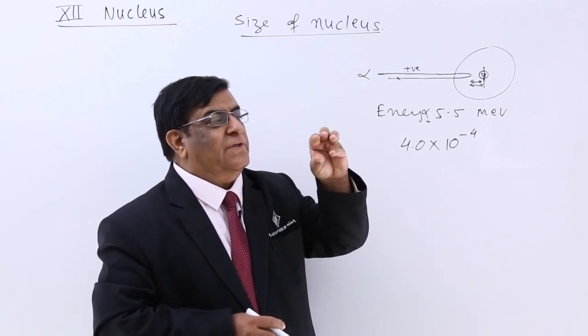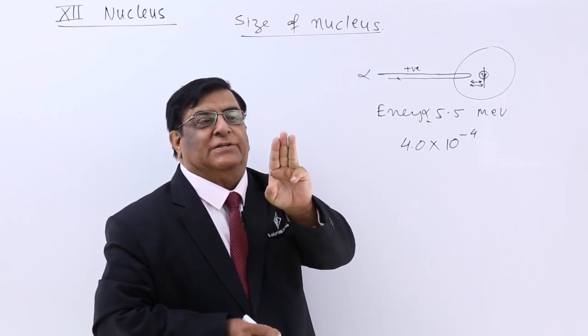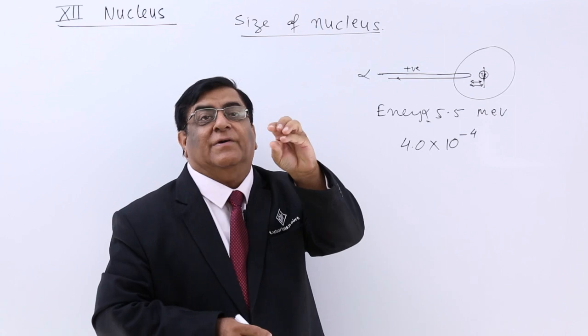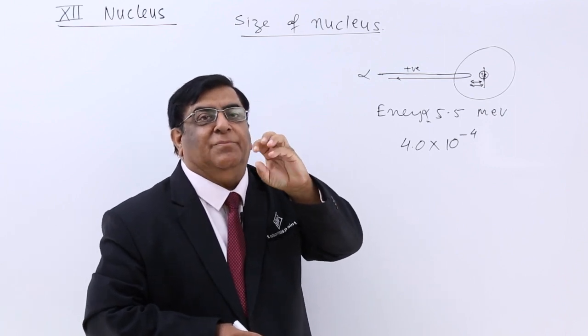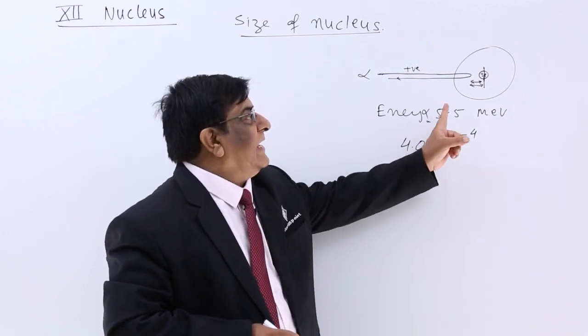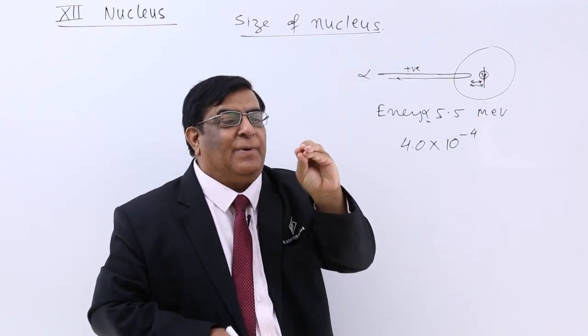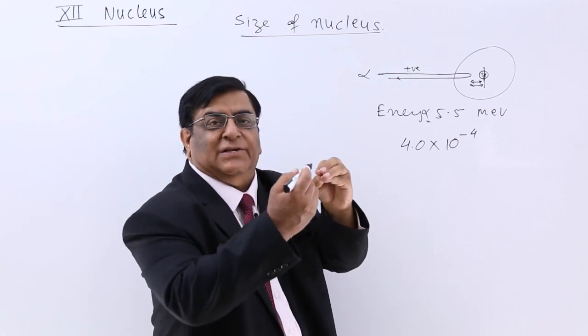Because if there is one proton, this is the size. There are two, there are three, there are four, there are five. So the size will keep on growing. That means the size of nucleus depends upon mass. Many particles we keep together, the size will increase.